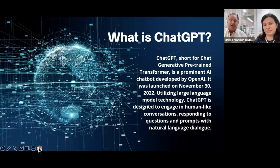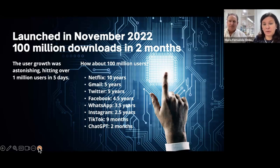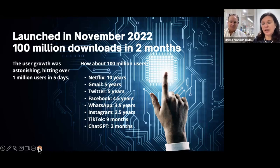When OpenAI opened this up last November, it had scoured the entire internet. We are now on ChatGPT version 4, which has over a trillion data points — it's basically read the entire internet. It was launched in November 2022, and in the first two months it acquired 100 million users. To compare: Netflix took 10 years, Gmail 5 years, Twitter 5 years, Facebook 4.5 years, WhatsApp 3.5 years, Instagram 2.5 years, TikTok 9 months — and ChatGPT, just 2 months.